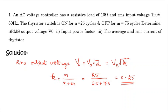Substituting the duty cycle into the RMS output voltage formula: Vs is 120 volts, so 120 into root of 0.25, which gives an answer of 60 volts. So the RMS output voltage is 60 volts.